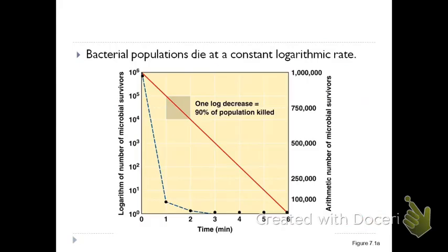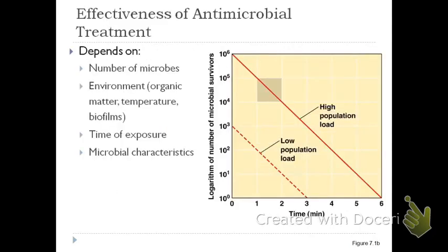Bacterial populations die at a constant logarithmic rate. The effectiveness of antimicrobial treatment depends on several factors, most importantly the number of microorganisms. It is easier to sterilize glass layers that are clean compared to those contaminated with microbes.